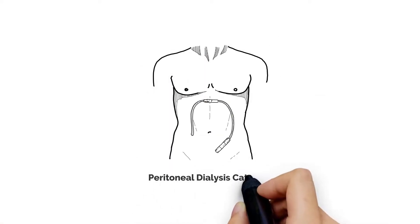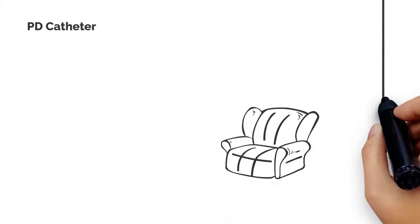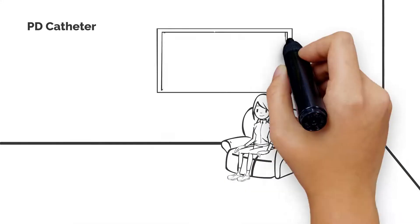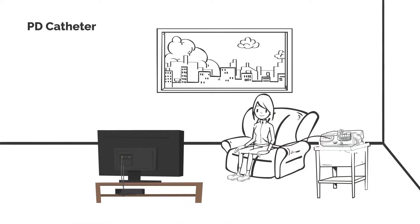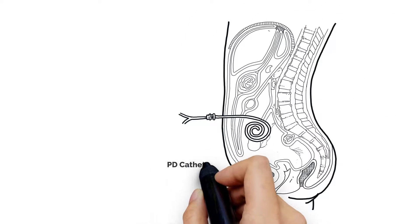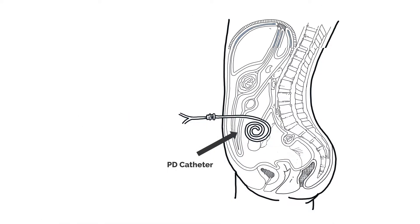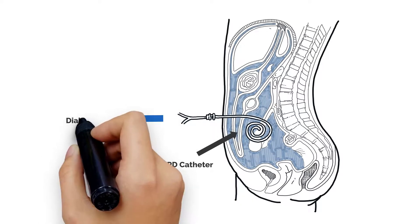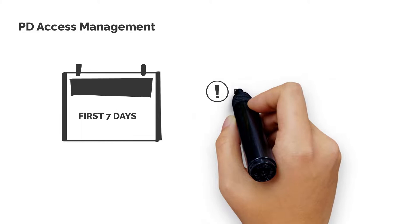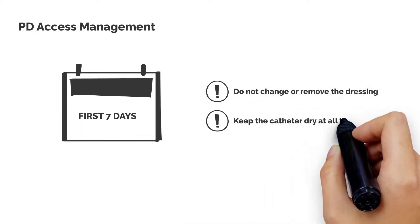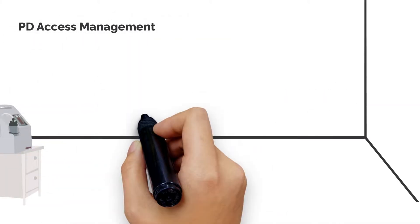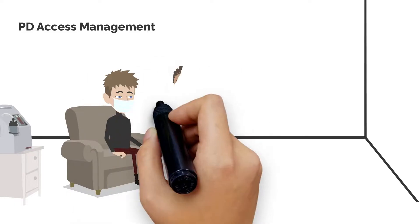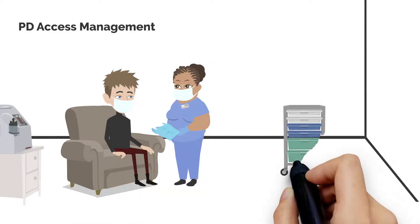Finally, we have the peritoneal dialysis catheter, which is used for peritoneal dialysis or PD. A soft tube is surgically placed in the abdomen, and it allows dialysate to flow in and out of the peritoneal cavity. For the first week after placement, patients are instructed to not change the dressing, and a sterile dressing change is usually done at the clinic by a trained PD nurse.